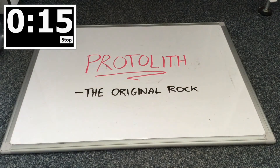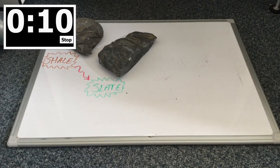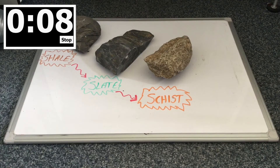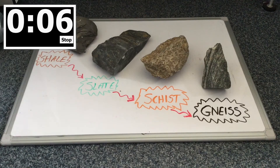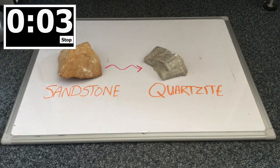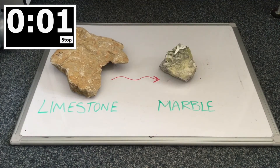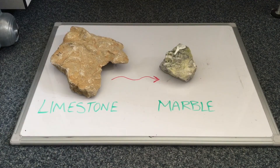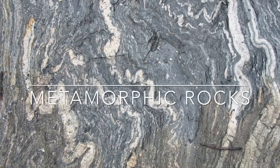The original rock that the metamorphic rock is formed from is called the protolith. Shale, a sedimentary rock, becomes slate; with increased metamorphism it becomes schist, and then eventually gneiss. Sandstone, a sedimentary rock, becomes quartzite. Limestone, also a sedimentary rock, becomes marble. And that was metamorphic rocks in a minute.